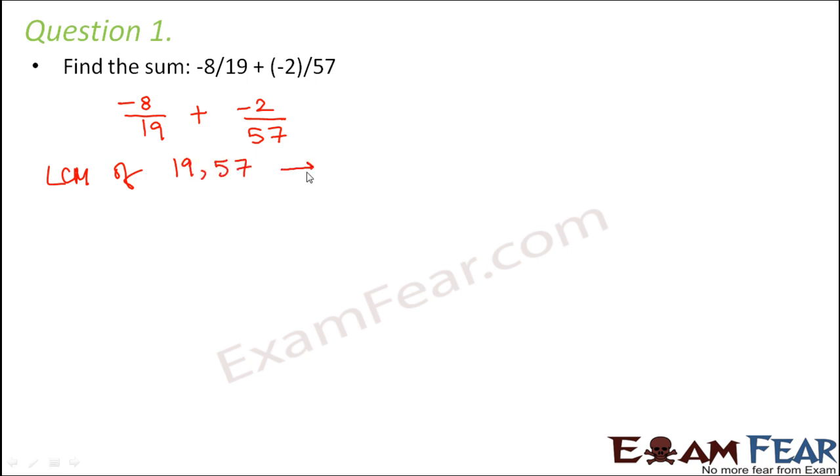So the LCM of 19 and 57 would be 57. Therefore, -8/19. So what can you multiply so that you get denominator as 57? 19 into 3 is 57. So you multiply the numerator and denominator by 3.